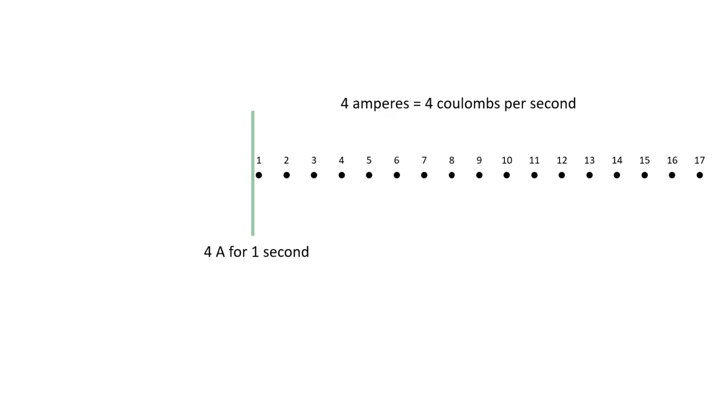Four amperes flowing past a point for one second moves four coulombs of charge past that point. If it flowed for two seconds, then eight coulombs of charge passed. If it flowed for three seconds, then 12 coulombs passed, and if it flowed for four seconds, then 16 coulombs passed.